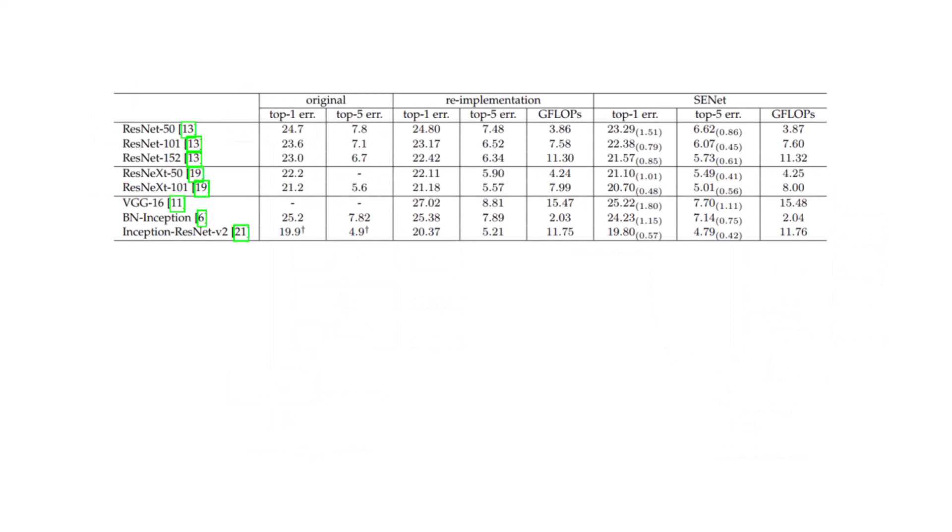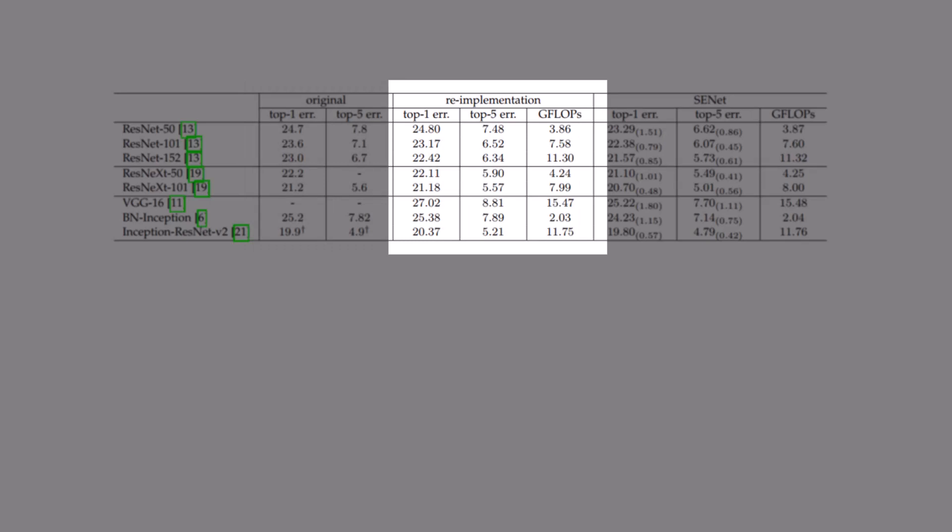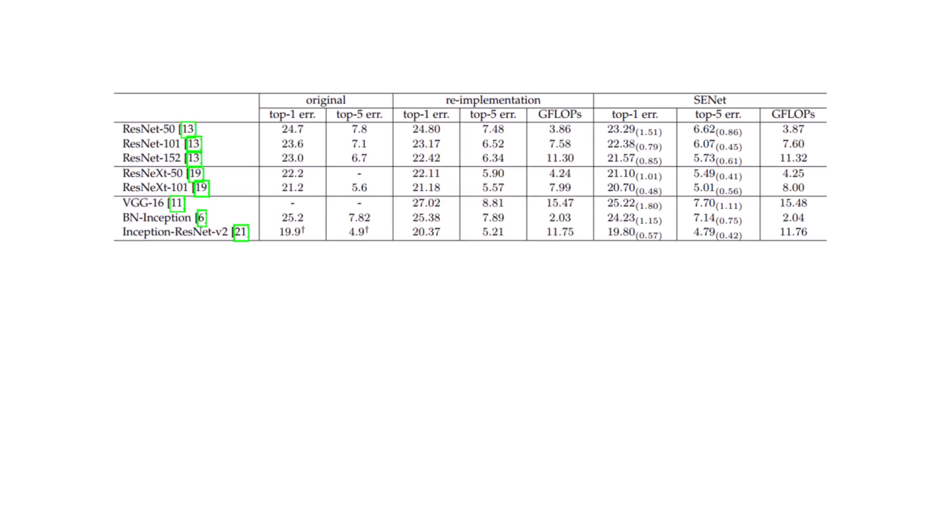And now let's just compare the performance versus complexity. In this table, the original column is the one that the authors of the models reported in their papers. Reimplementation column is, as the name suggests, the implementation of the models in the current paper. And the SENet column is the effect of adding squeeze and excitation operators. So, in this paper, the errors are coming from ImageNet dataset, and as we can see,